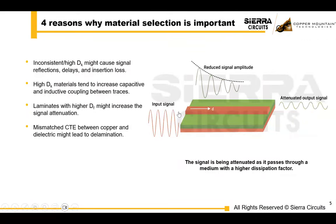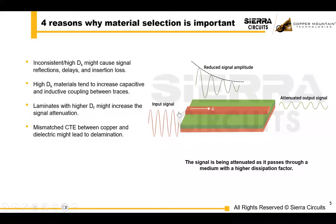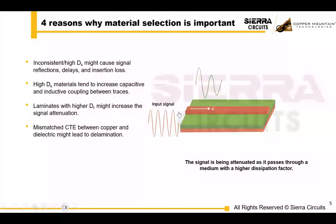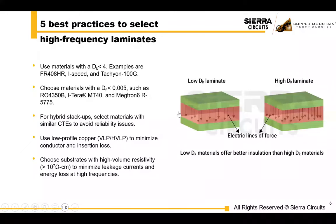We're going to talk about material selection first. High dielectric constants tend to increase the capacitive and inductive coupling between traces, meaning traces start interacting more, leading to crosstalk and noise. Selecting a material with a higher dissipation factor will increase the risk of signal attenuation, so you don't want to do that. You also have to be aware of the CTE of the copper and dielectric — if they don't match, you can have separation after the board is built. To reduce signal loss, opt for materials with a low dielectric constant. Optimal performance for high-speed PCBs can be achieved with materials like Rogers 4350, ITERRA, or Megtron. Talk to your fabricator about material costs and make sure it meets your end-use requirements.